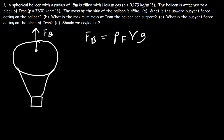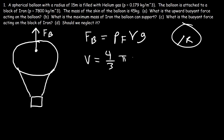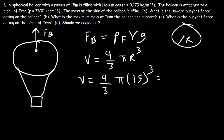The first thing we need to do is calculate the volume of the balloon. The volume of a sphere with radius r is (4/3)πr³, so that's (4/3) × π × 15³, which gives us 14,137 cubic meters. That's the volume of the balloon.